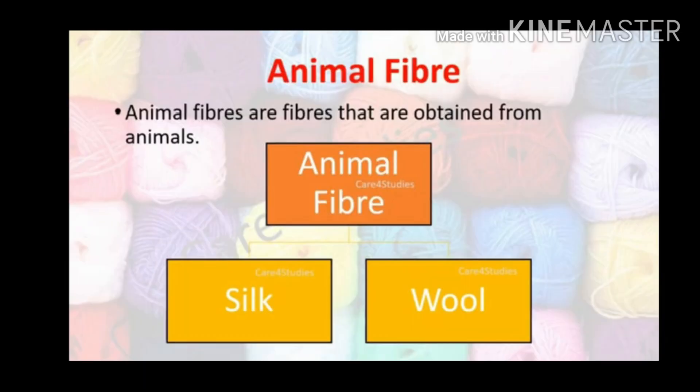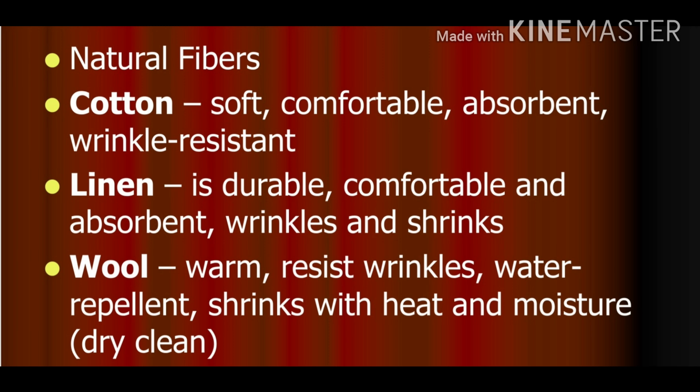Animal fibers such as silk are obtained from silkworms, and wool is obtained from different animals like sheep, goat, alpaca, camel, yak, rabbit, etc. They also have things in common — they are soft and comfortable. Some are wrinkle resistant, while some are prone to wrinkling and shrinking, and some need to be protected from heat and moisture, such as wool.